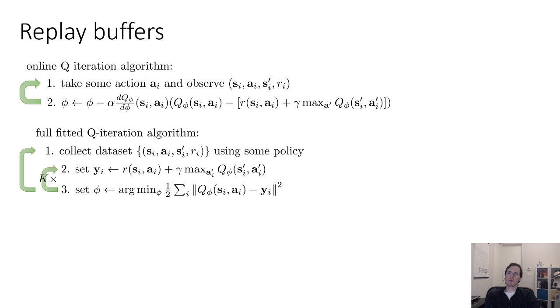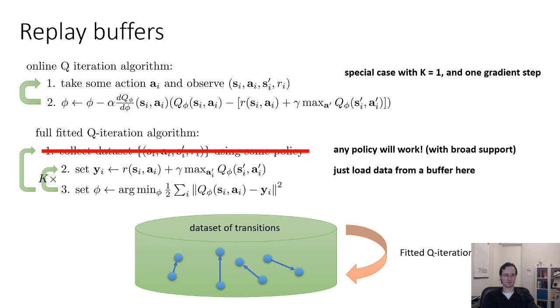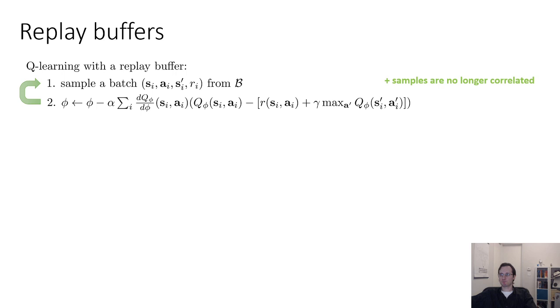One way to mitigate this is to use replay buffers. The idea is to actually do something a little more similar to the full-fitted Q iteration but still have it retain the flavor of an online method. Remember, in full-fitted Q iteration, we would collect a dataset using some policy and then train on that dataset many times. In a sense, online Q learning is a special case of this full-fitted Q iteration algorithm where K equals 1, where we don't alternate between targets and regression, and there's only one gradient step in step 3. Now remember that any policy will work as long as it has broad support. So we can modify the full-fitted Q iteration to load data from a buffer. We can store data as we go, and when it comes time to update, we don't update on the latest transition, we actually load a batch of transitions from all the transitions we've seen so far.